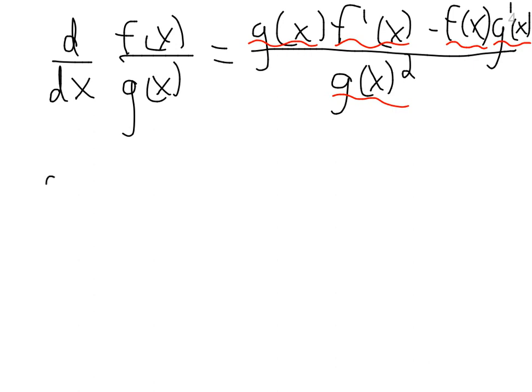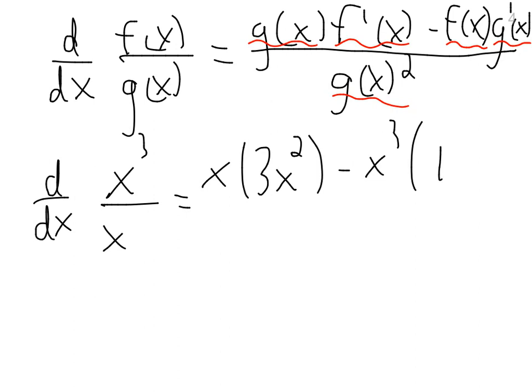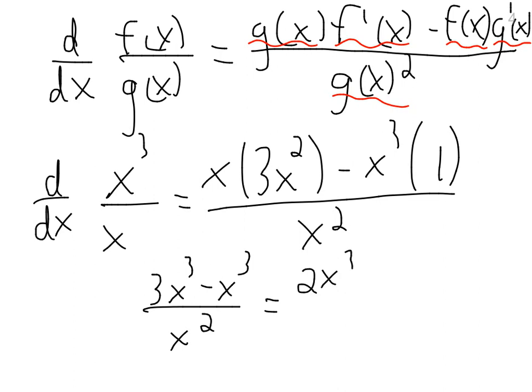So let's do an example. d/dx of, and again, something that would be obvious, but just to show the utility of the tool, x cubed over x would equal low times 3x squared, that's the derivative of x cubed, minus high, which is x cubed, d low, the derivative of x is 1, all over the bottom squared, x squared. So we've got 3x cubed minus x cubed over x squared, which is equal to 2x cubed over x squared, which is equal to 2x.